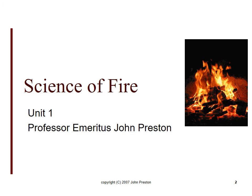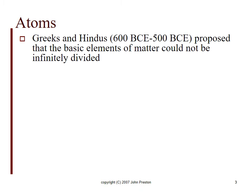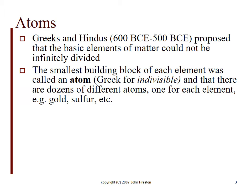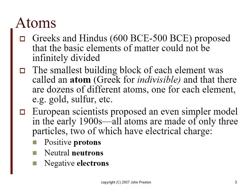We'll start with the science of fire. We're going to use a very basic model of the atom. It goes all the way back to the Greeks and Hindus, and one of their first concepts was they asked the philosophical question of can matter be infinitely divided, or do you get to some basic building block that cannot be further divided? And the smallest building block of each element was called an atom, which is Greek for indivisible. Therefore, in their idea there were dozens of different atoms, one for each element, a different atom for gold, sulfur, etc.